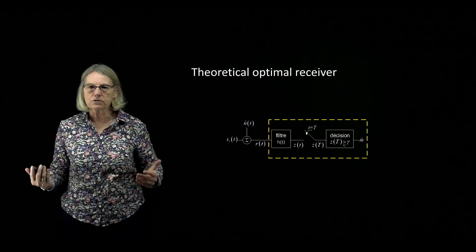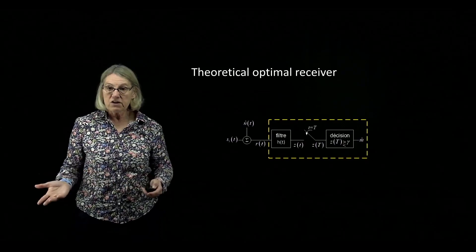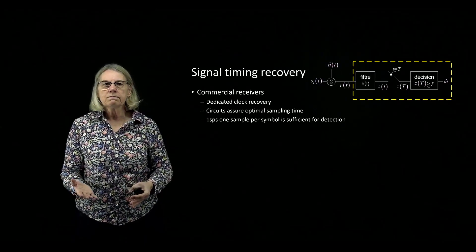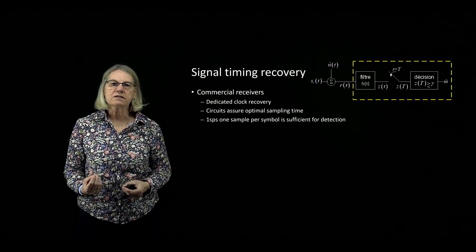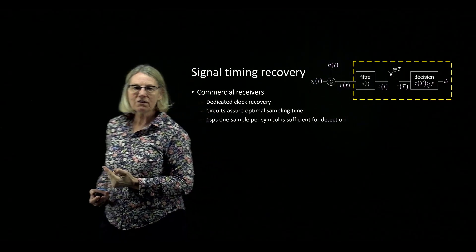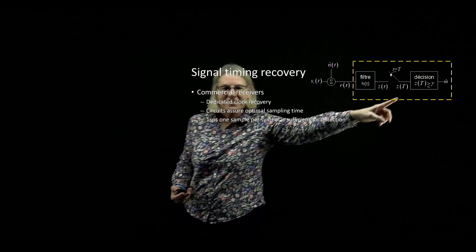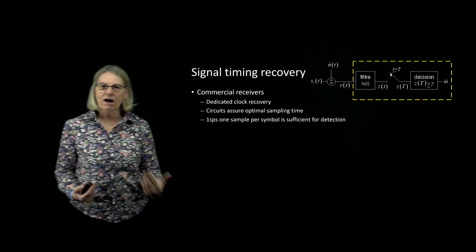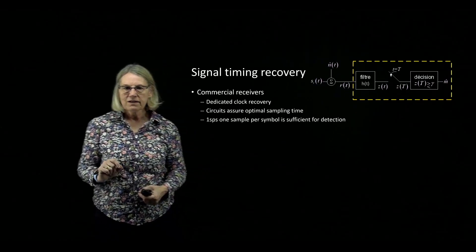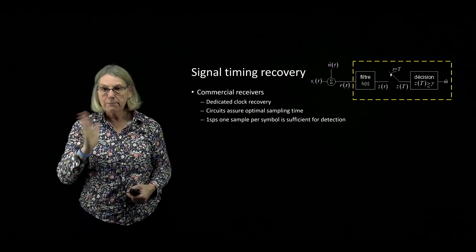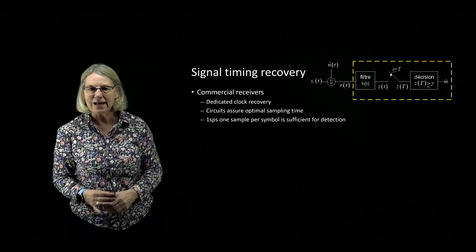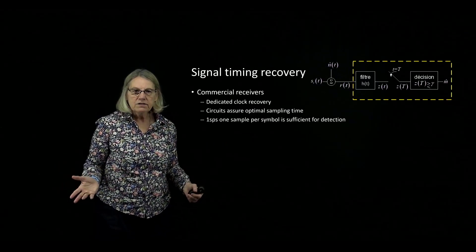Threshold detection can be used to make a simple decision process. In theory, one sample per symbol is enough. In a commercial receiver, there will be a dedicated clock recovery circuit to determine when sampling should occur in order to recover the best possible test statistic to determine the most likely symbol transmitted. These circuits ensure that sampling is taken at the optimal time, and because of that, one sample per symbol is enough for detection.